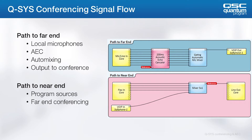The path to the near end mixes the far end receive signal or signals with any program sources, such as those from a presenter's computer. After the mix, these may be fed to a line output and on to an amplifier and speakers, or directly to a Q-SYS amplifier via QLAN.